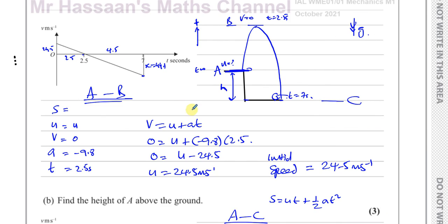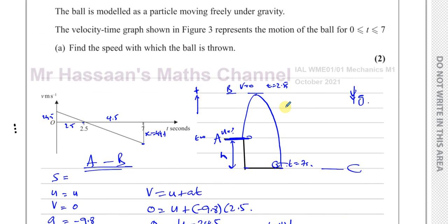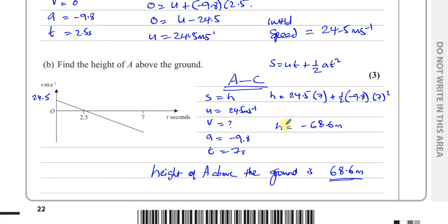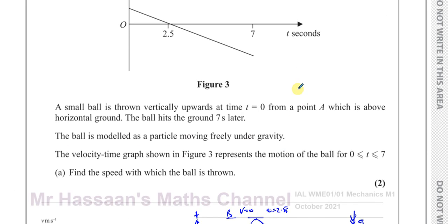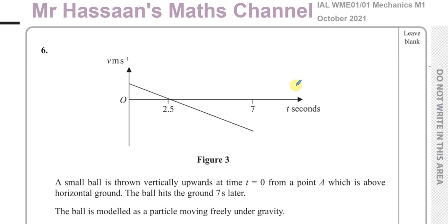That's question number 6 from the M1 International A-Level October 2021 paper answered. Other questions from this paper can be found in the playlist that will appear on screen. Other questions on SUVAT, motion under gravity, and kinematics can also be found in the playlist shown. You can subscribe to the channel by clicking the link. Thank you for watching.